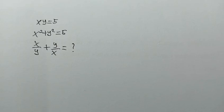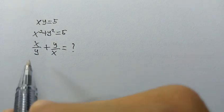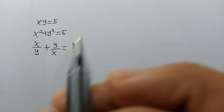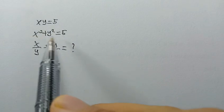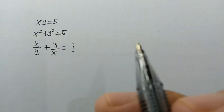In this video, I will explain how to find the value of x over y plus y over x if x times y is equal to 5 and x squared plus y squared is equal to 5.